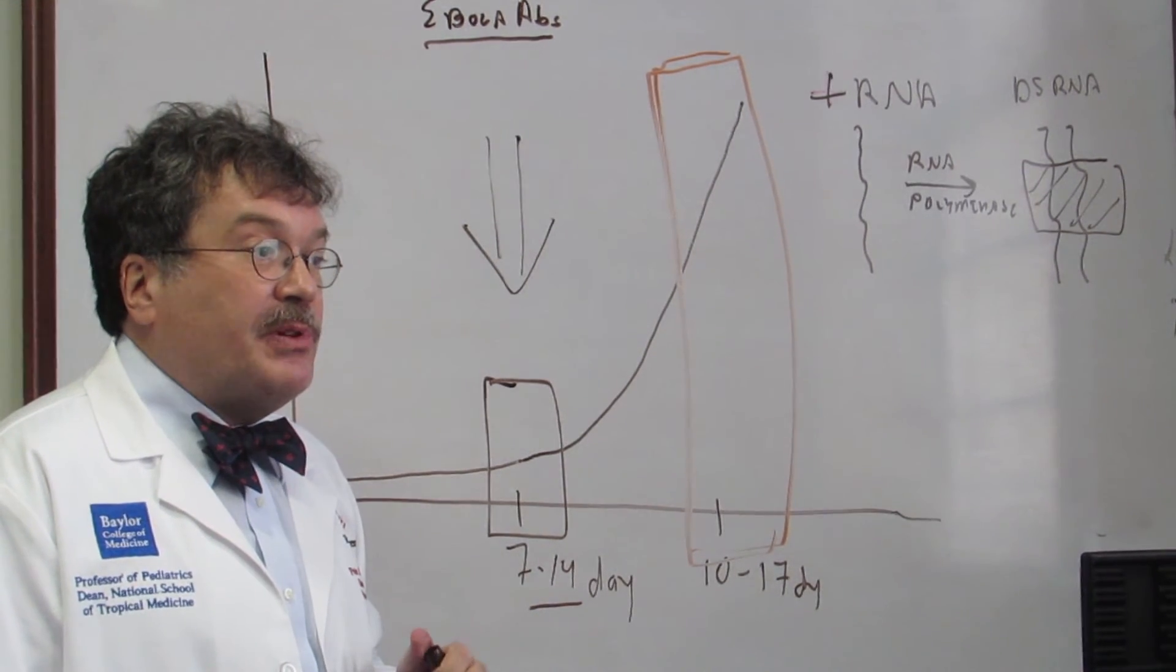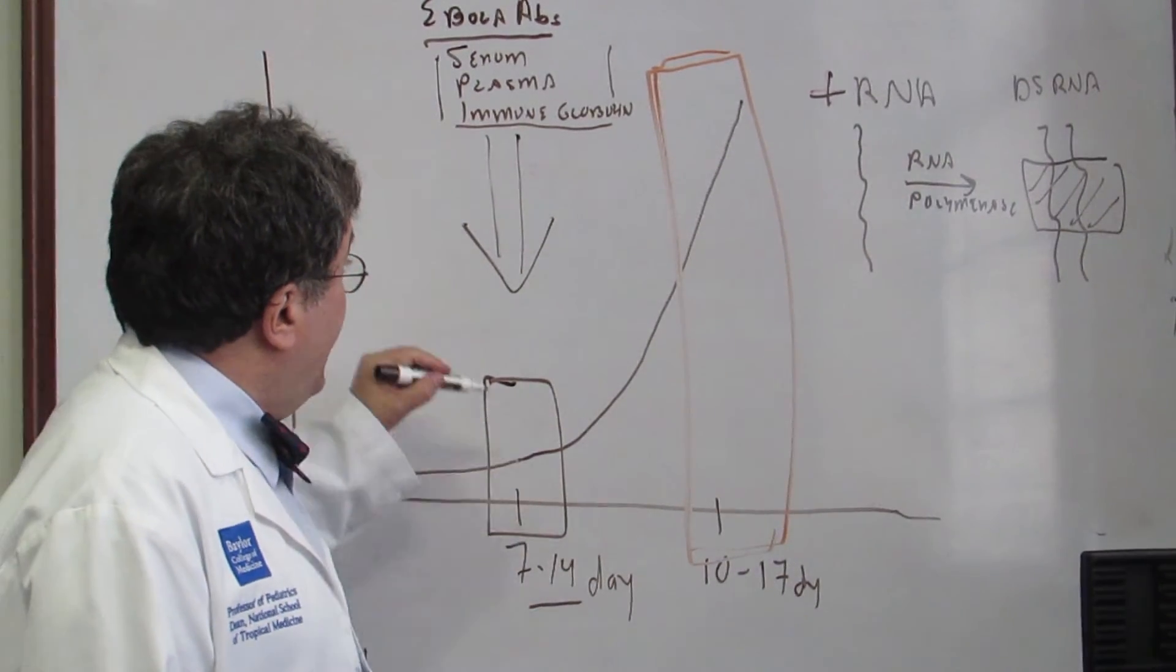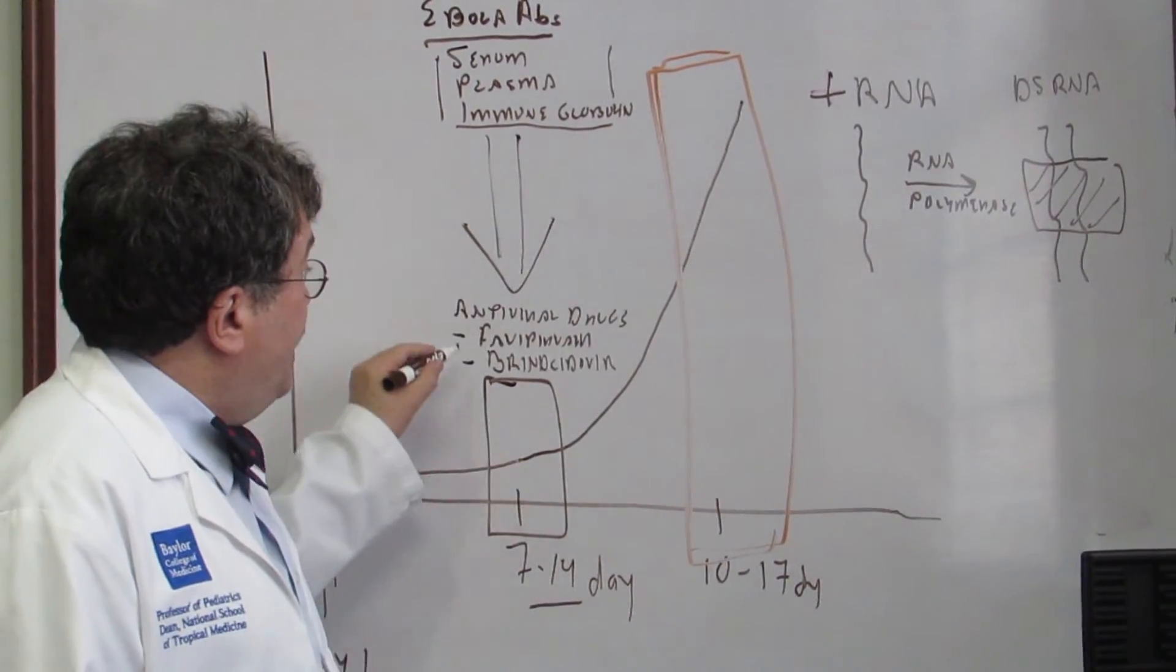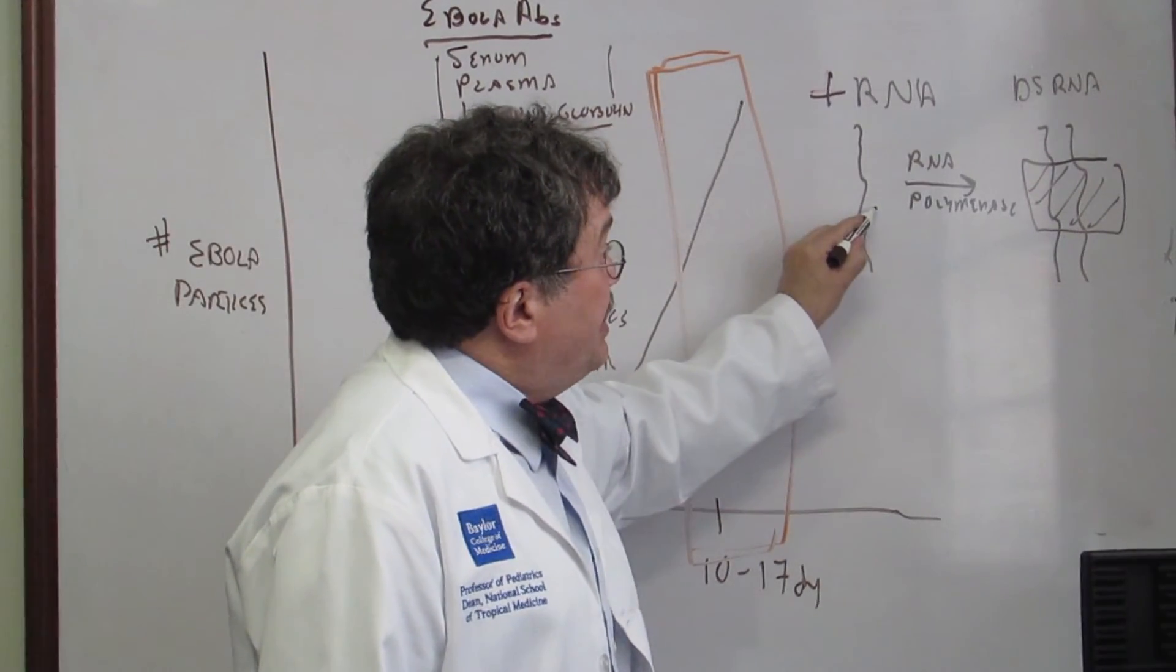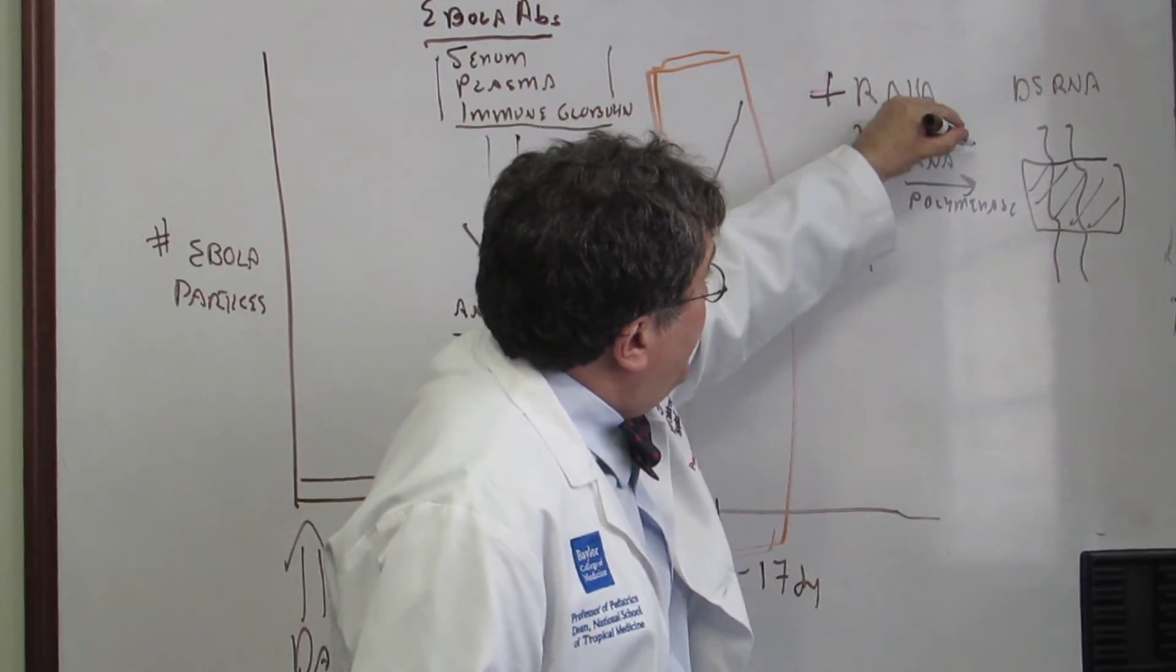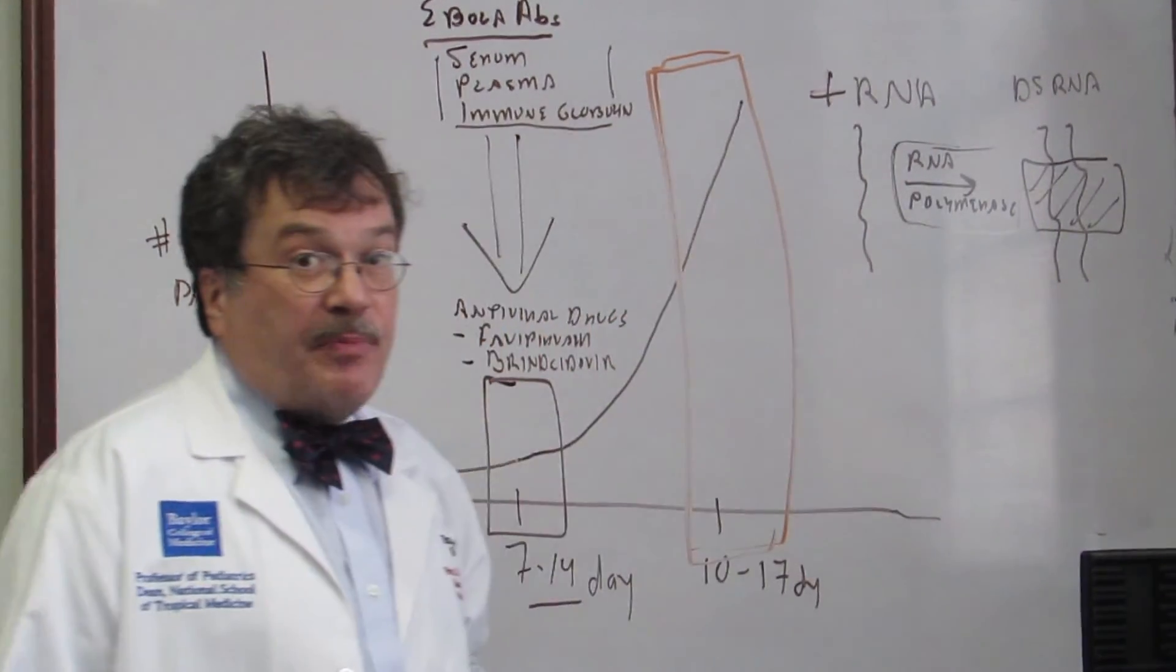Another opportunity to intervene is to use antiviral drugs. So these are drugs that inhibit the ability of the RNA virus, Ebola virus, to replicate by inhibiting this enzyme called RNA polymerase. So it's actually preventing virus replication.